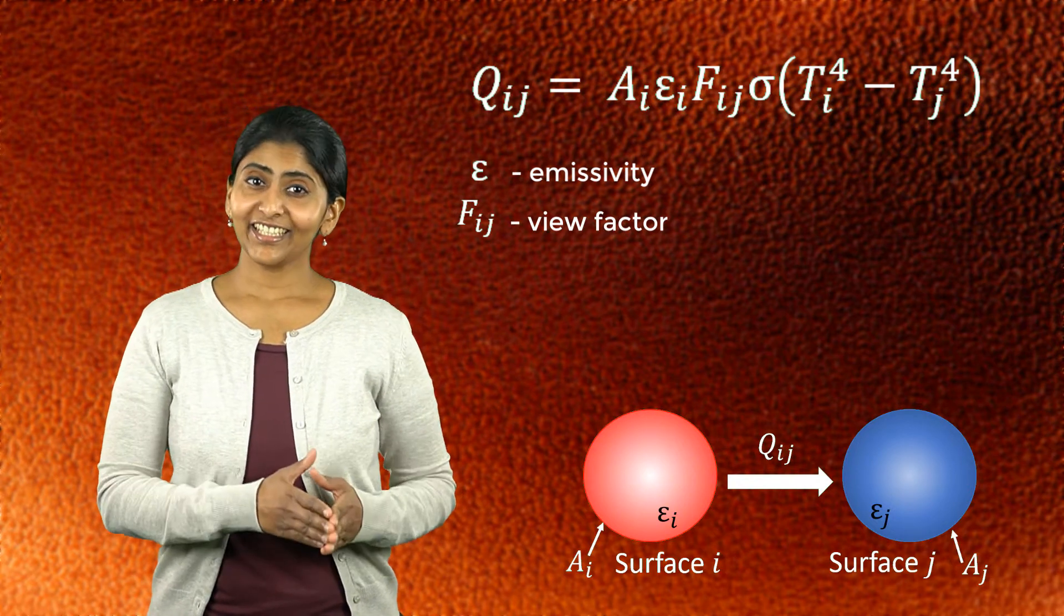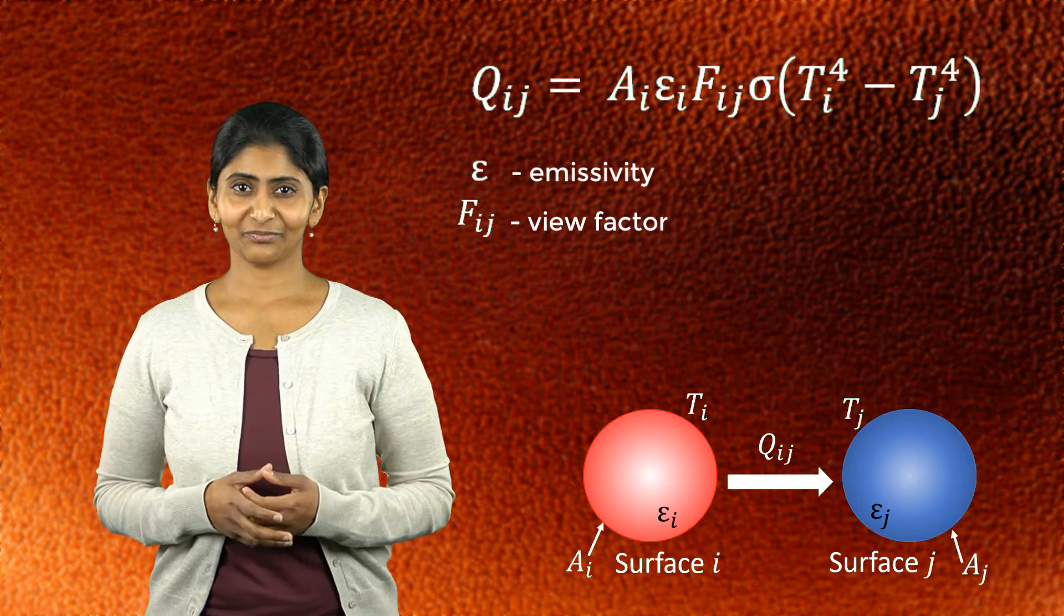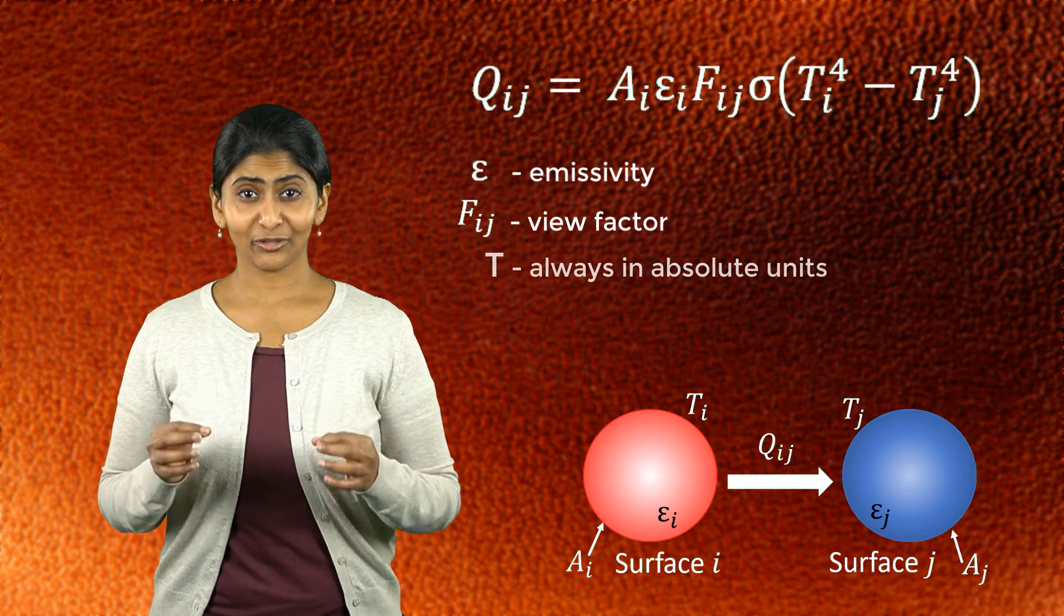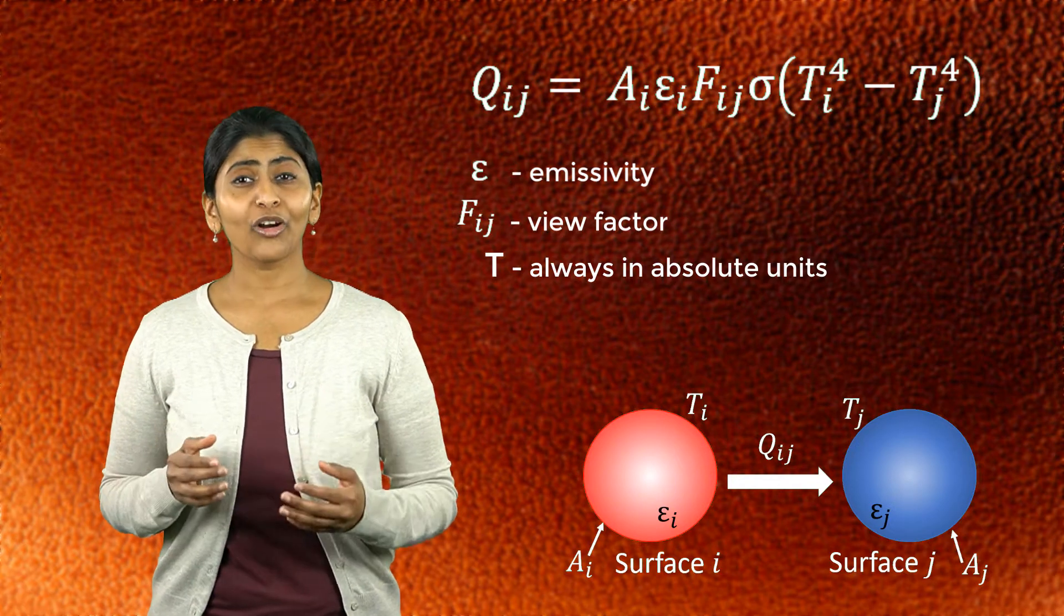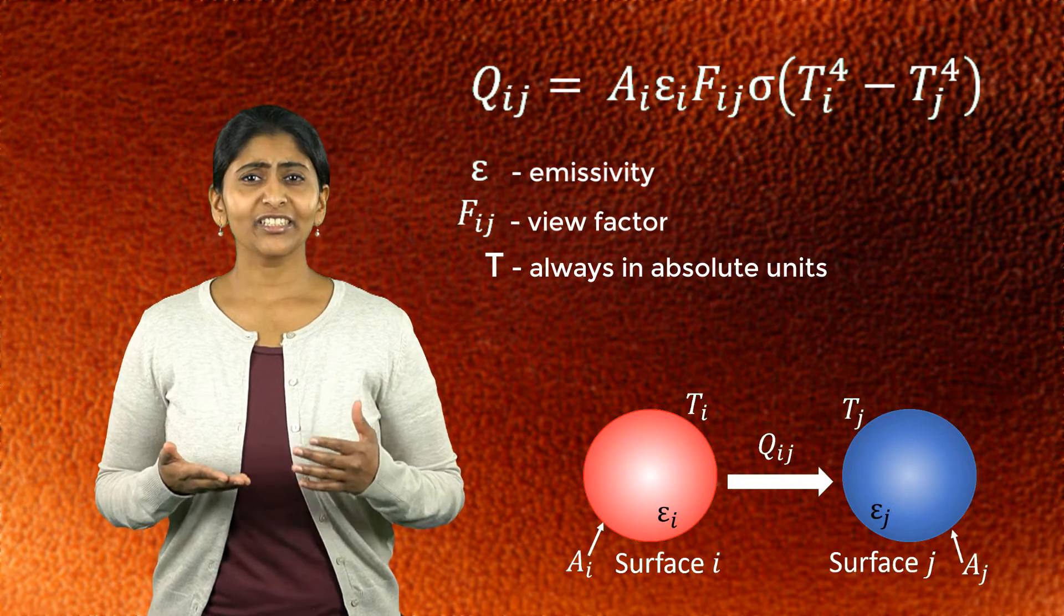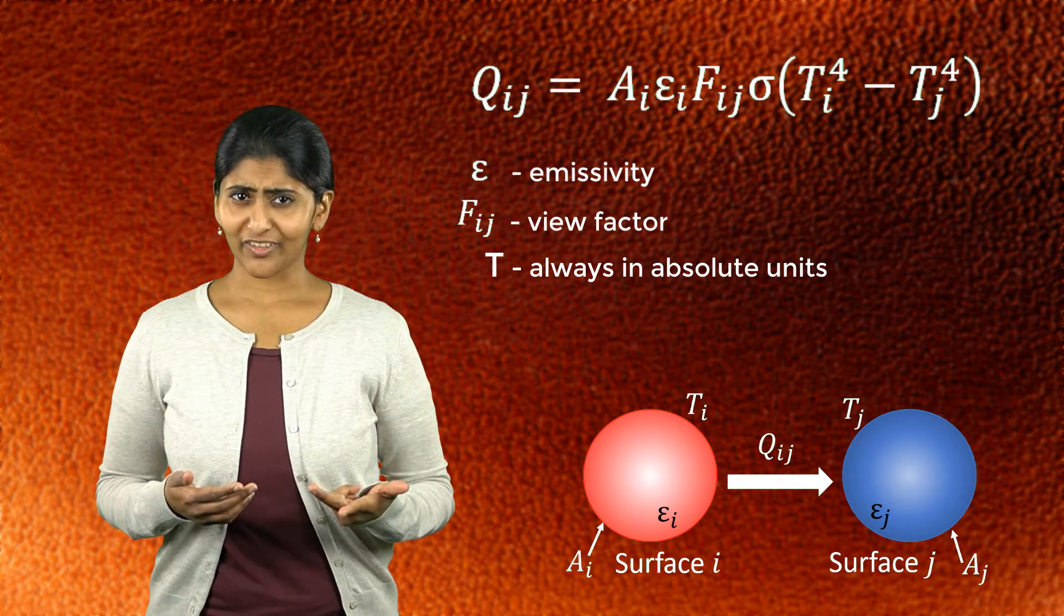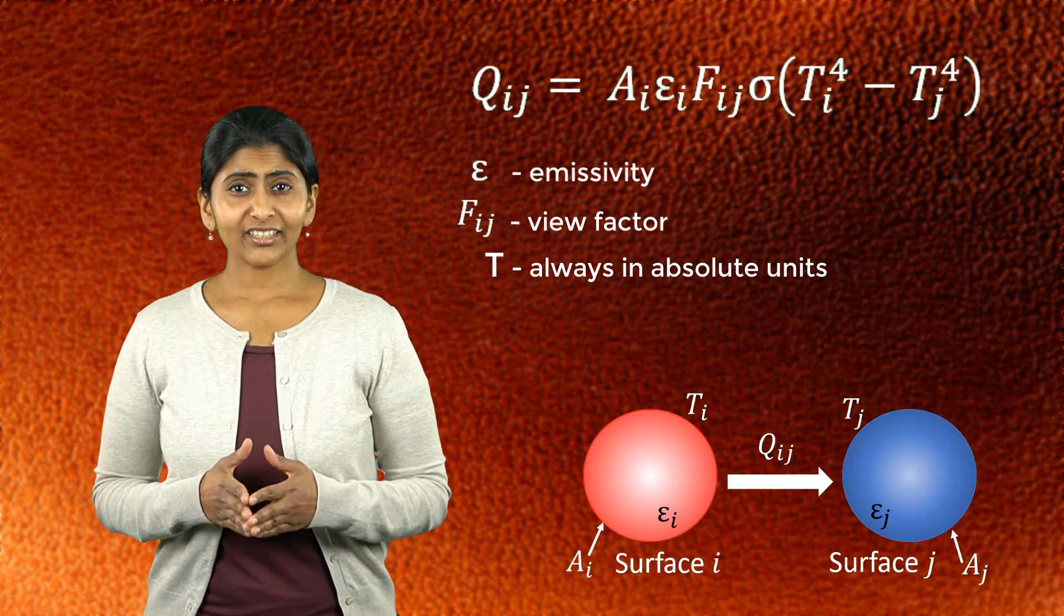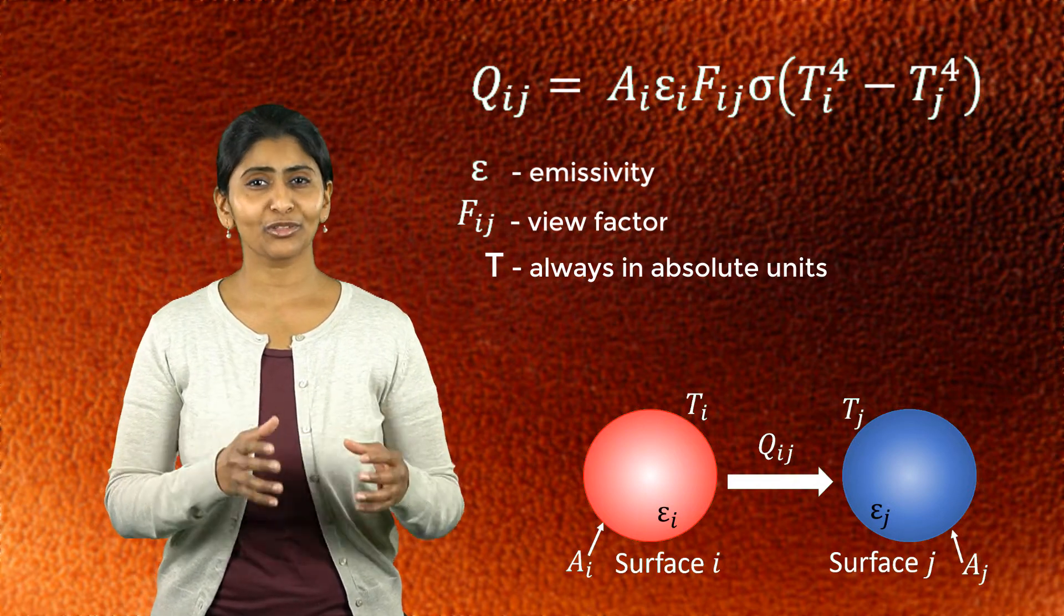T_i and T_j are the surface temperatures in absolute units. It is important to note that we always use the absolute scale, i.e., Kelvin or degree Rankine when modeling radiation. For everything else in thermal simulations, say phase change or conduction or convection, we can use any temperature scale. But for radiation, calculations must be performed in an absolute scale.